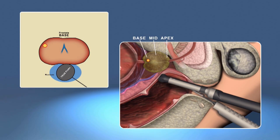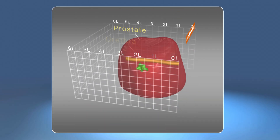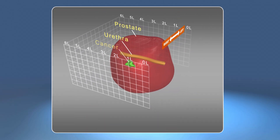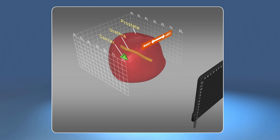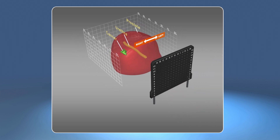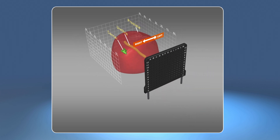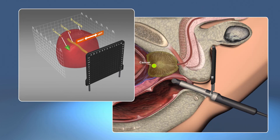Although this patient was diagnosed with a small area of cancer on the traditional biopsy, we decided to perform a three-dimensional staging biopsy so that we can identify any potentially missed areas of cancer, as well as determine the patient's eligibility for treating only the areas of cancer — a procedure known as targeted focal therapy.